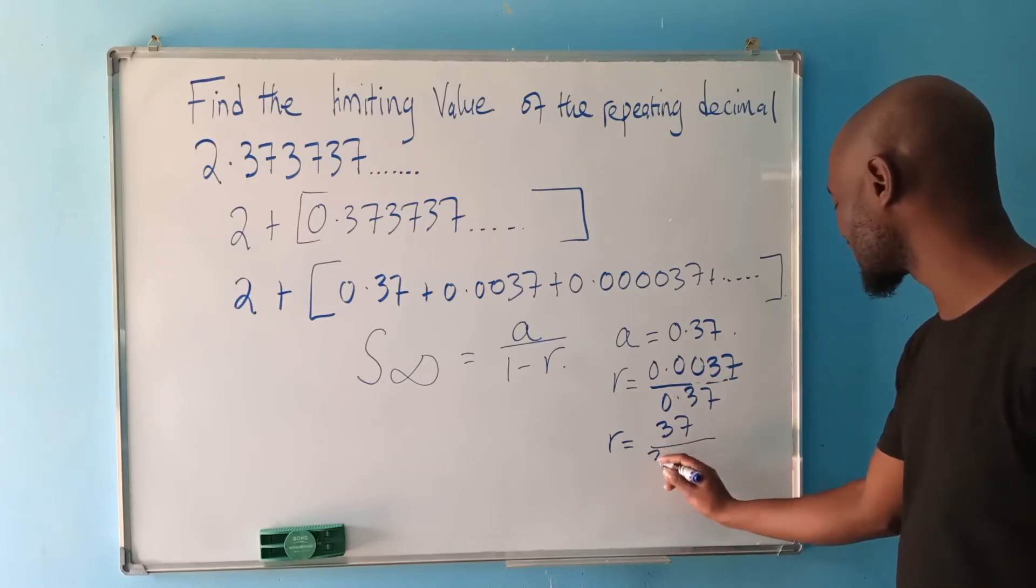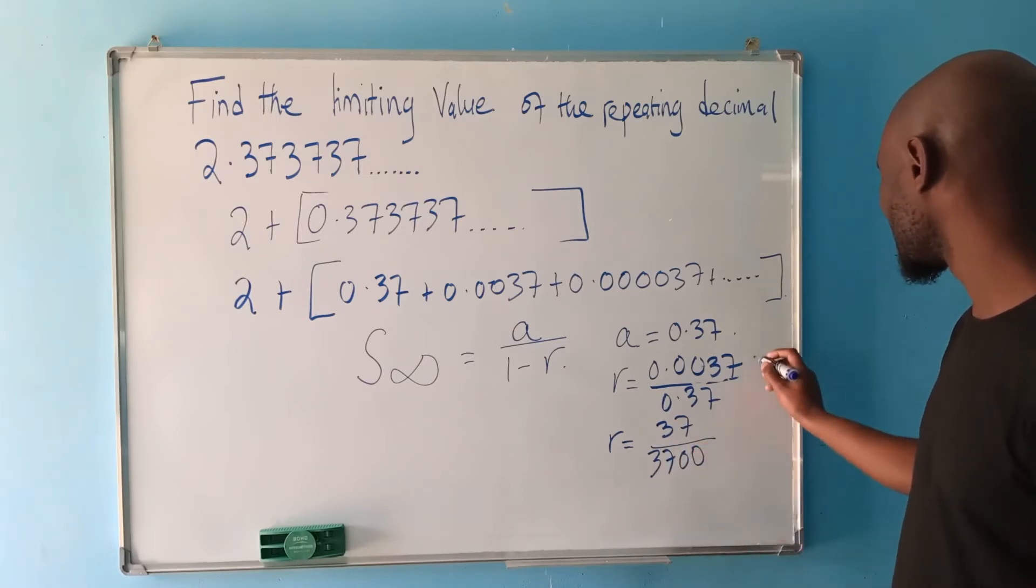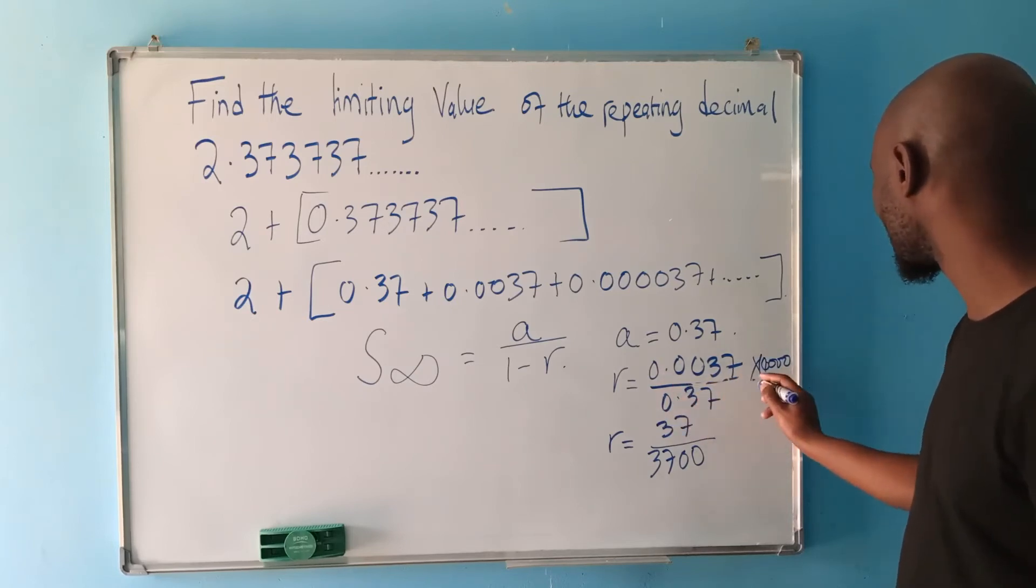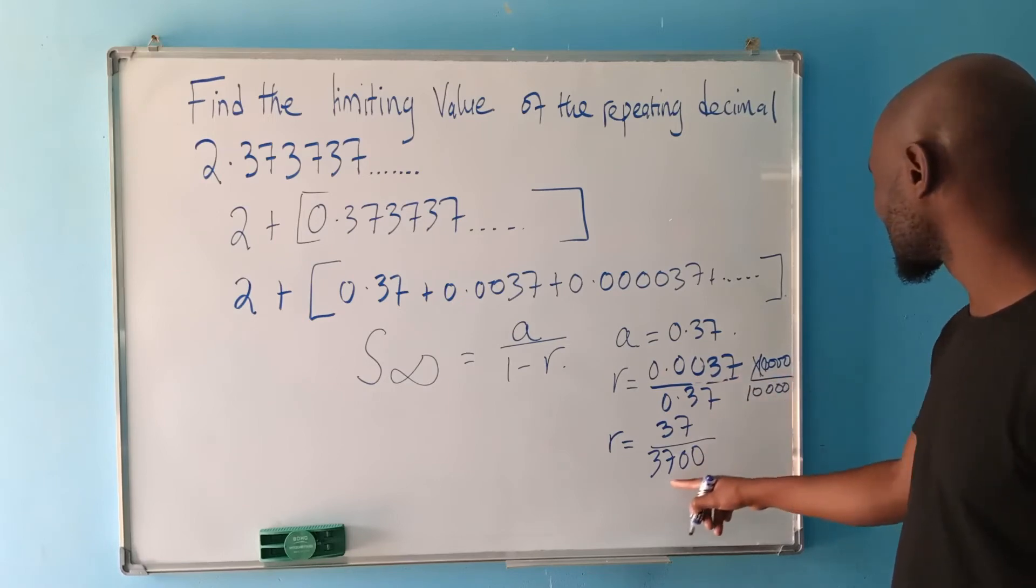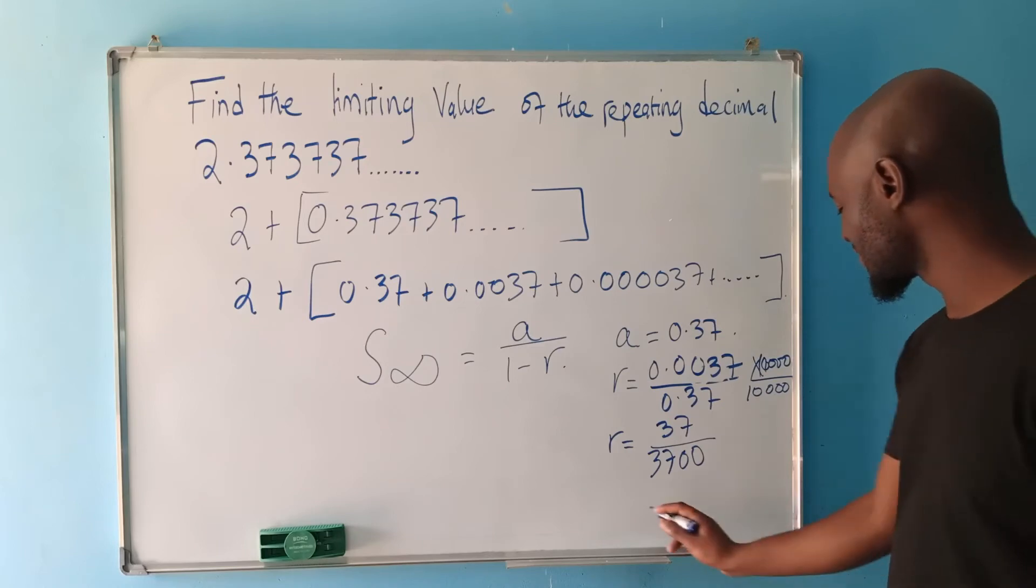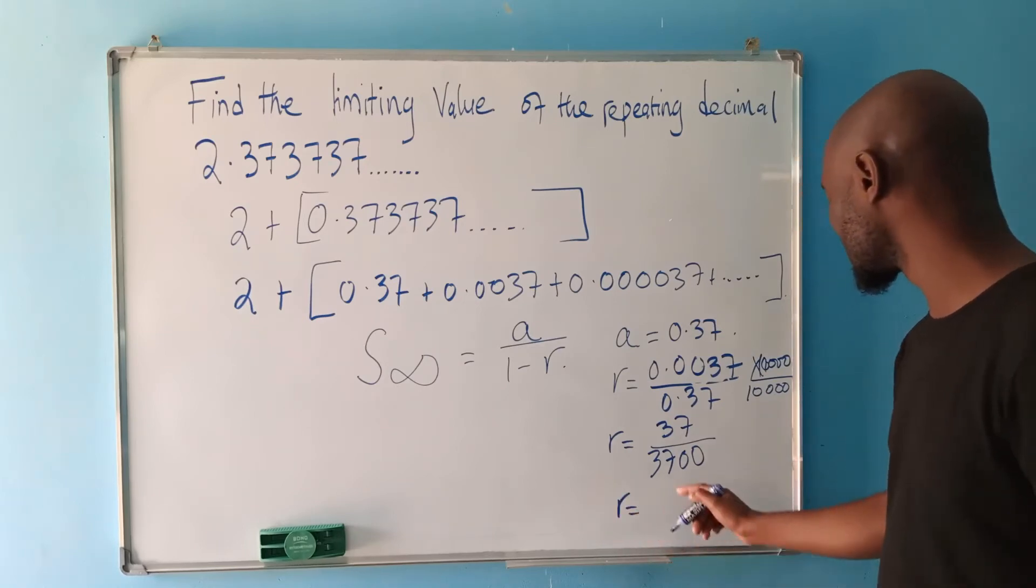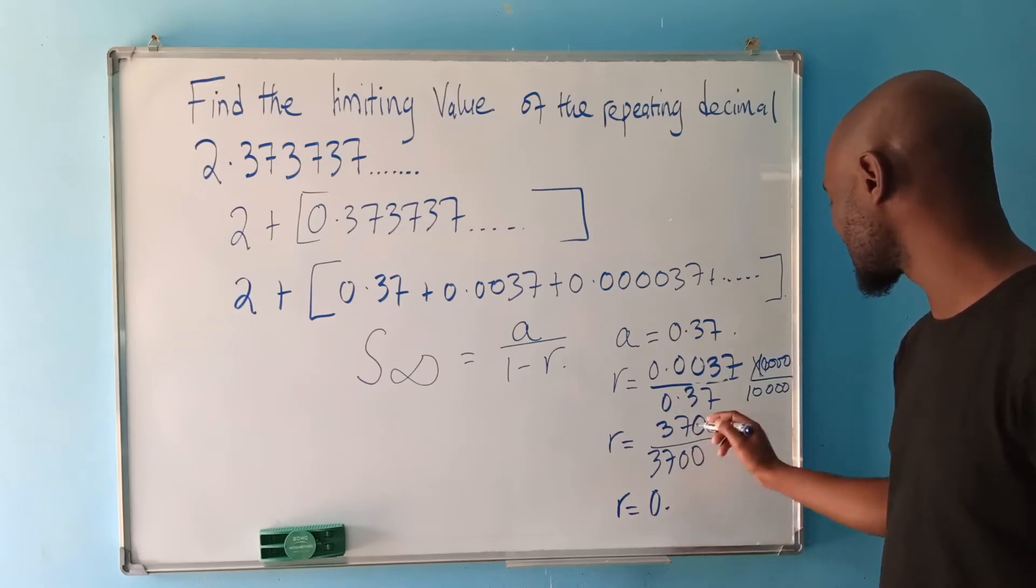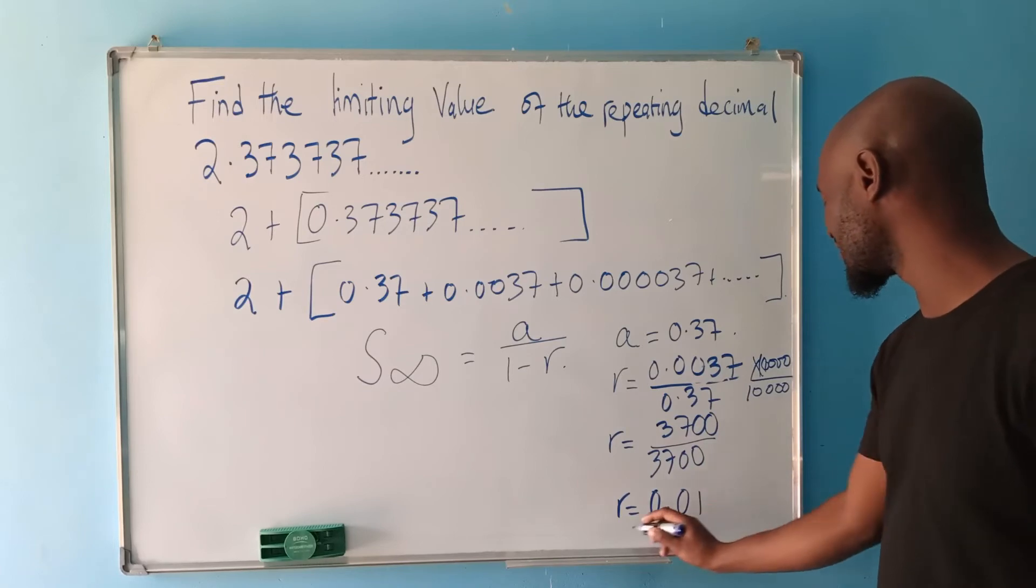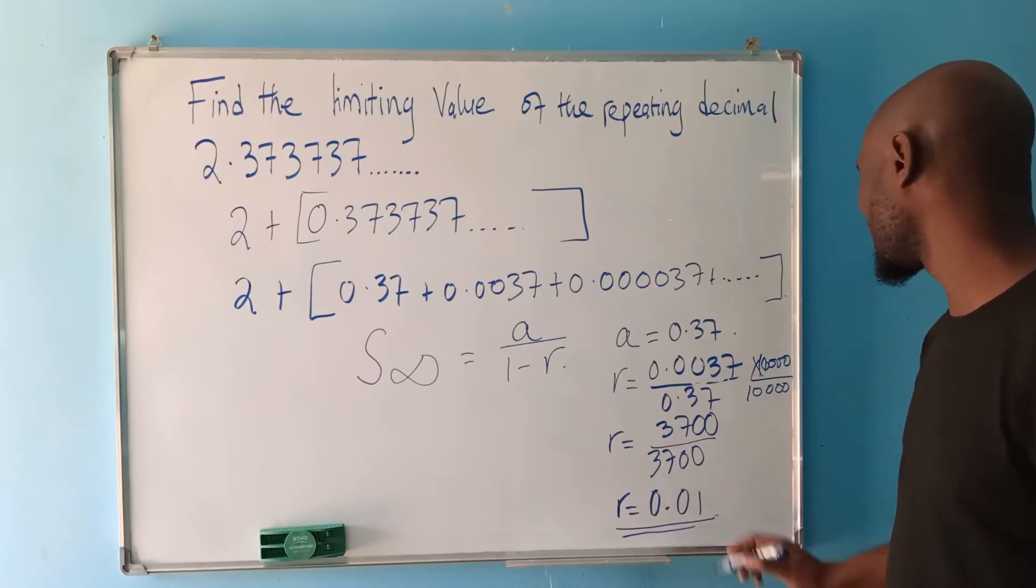This one, if I try to remove the decimal number, I'll have 37. But I'll move this four places of decimal point. So even here, I can move four. I'll end up having 37, 0, 0. You multiply this by 10,000 so that this decimal point can come there. But whatever you do there, you do it even down here. This is what we are ending up having. So R will be equal to 0.01. This will be our common ratio.